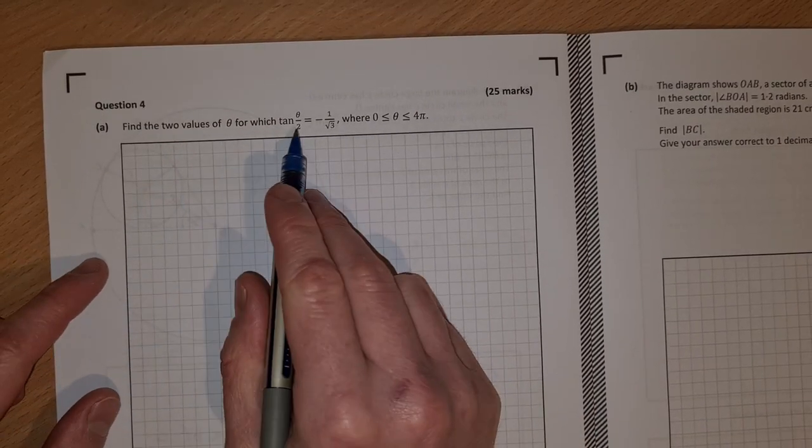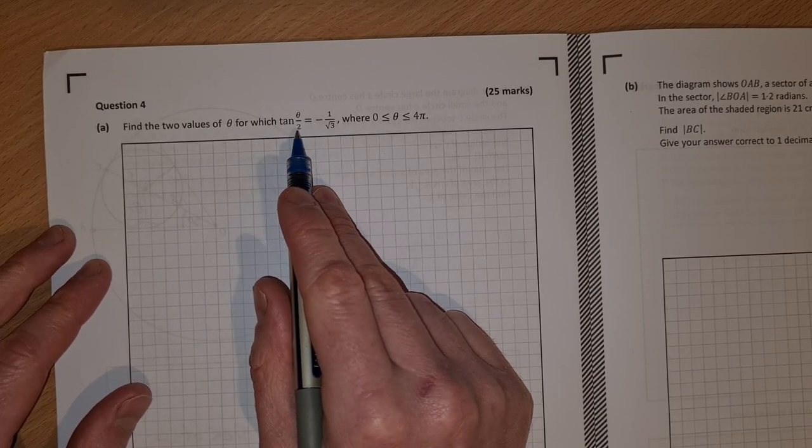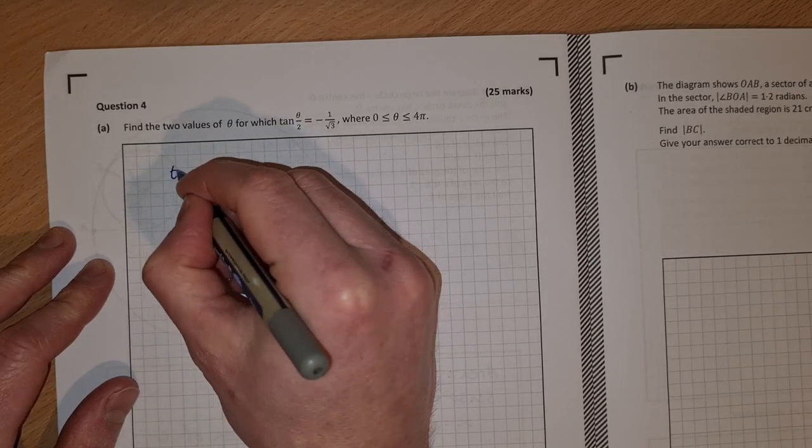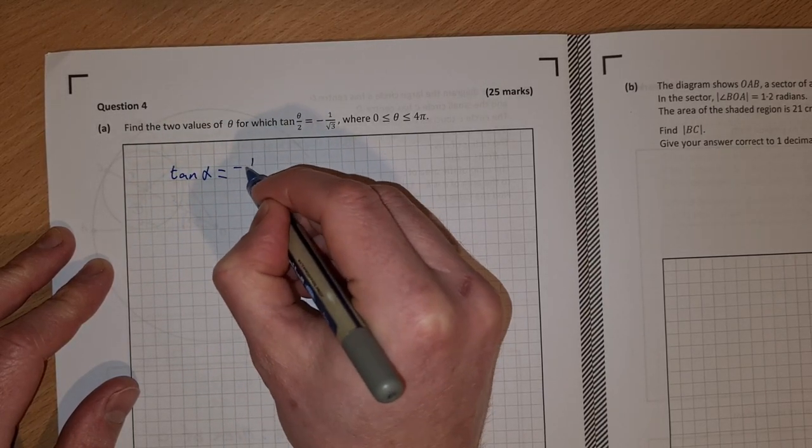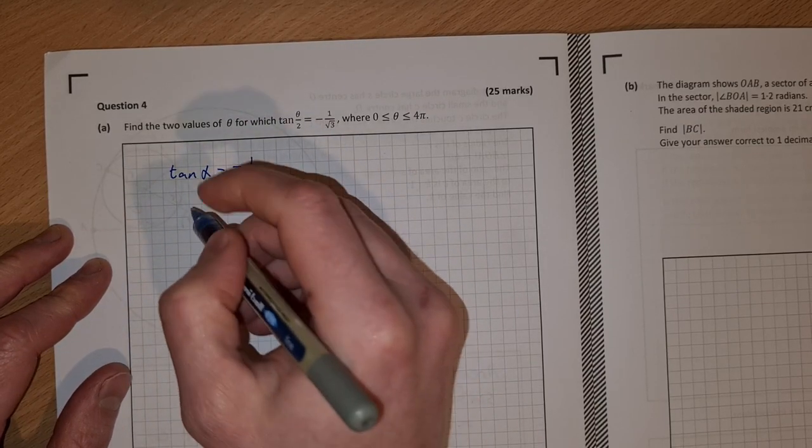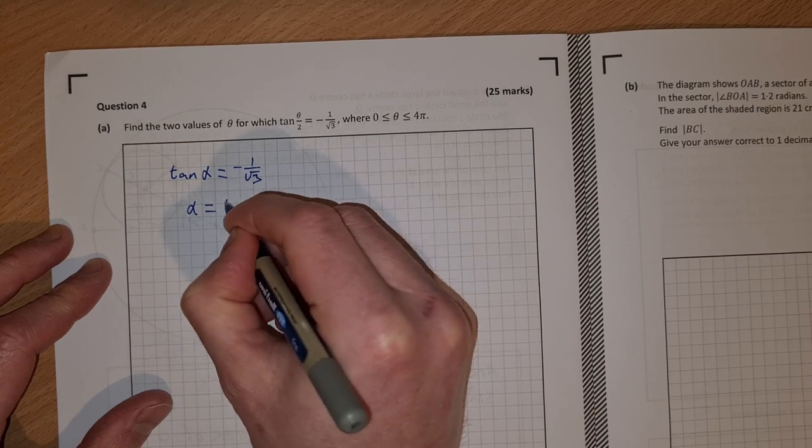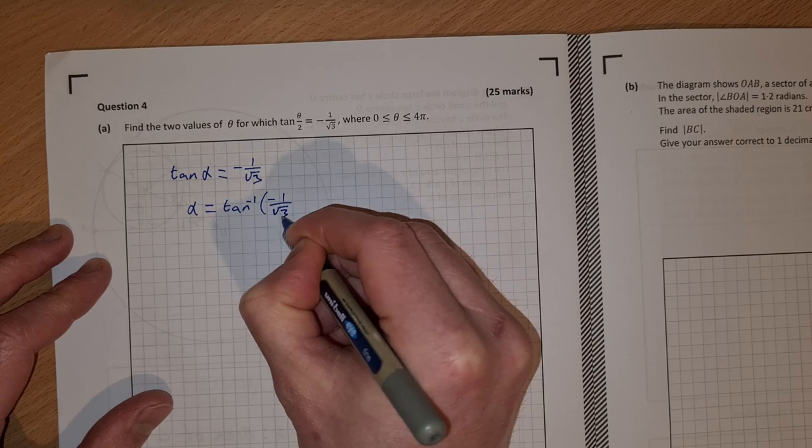To solve this equation, instead of solving for theta over 2, I'm going to do tan of alpha is equal to minus 1 over root 3. And we can get alpha is equal to the inverse tan of minus 1 over root 3.